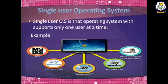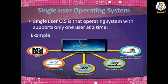Here are examples of single user operating systems: MS-DOS, Windows 95, Windows 97, Windows 98, and Windows 2000. These are the most common types of operating system used on home computers as well as computers in office and other work environments.